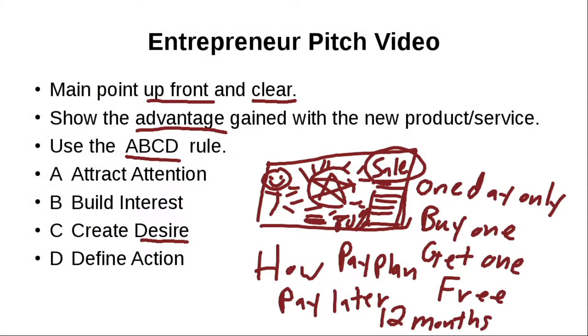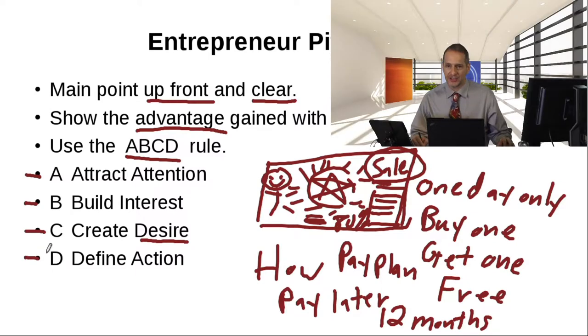One more time because I think it's really easy to remember. And it's a great rule of thumb. And this is how you make your video for selling your pitch. Making your pitch. Selling your product. A. Attract attention. B. Build interest. C. Create desire. D. Define action. ABCD rule for marketing. And this applies to making your entrepreneurial video. Of course. A great way to do it.